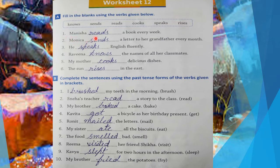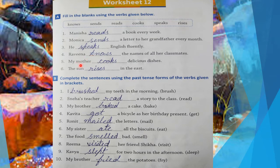The first sentence is: Manisha reads a book every week — fill 'reads'. Second: Monica sends a letter to her grandfather every month — fill 'sends'. Third: He speaks English fluently — fill 'speaks'. Fourth: Raveena knows the name of all her classmates — fill 'knows'. Fifth: My mother cooks delicious dishes — fill 'cooks'. Sixth: The sun rises in the east — fill 'rises'. Question number A is done.